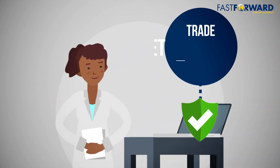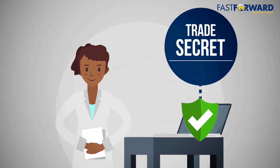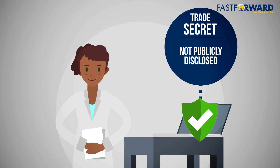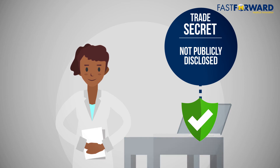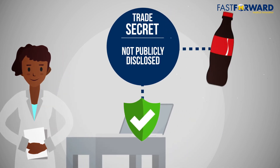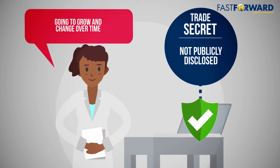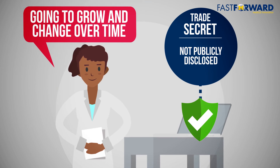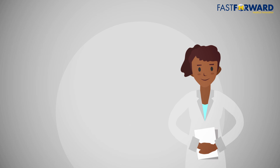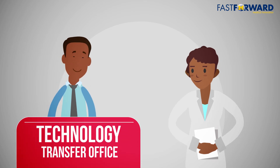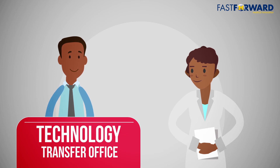Finally, a trade secret strategy is common in software and does not publicly disclose how the idea is produced. The protection lasts as long as the secret is kept — for example, what is the secret formula of Coca-Cola? Consider the trade secret route if your technology is probably going to grow and change over time. If you are at an academic institution, contact your technology transfer office to discuss the most appropriate IP strategy for your digital health technology.